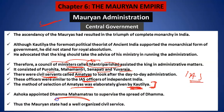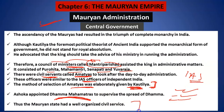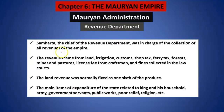Ashoka had appointed Dhamma Mahamatras who were responsible for spreading Dhamma throughout the country. The entire nation had a very well organized political setup. Let us look at it one by one. Let us first understand the revenue department. Samartha was the chief of the revenue department, and revenue used to come from various sources.